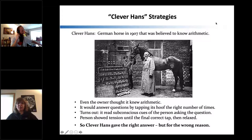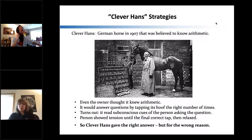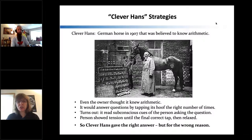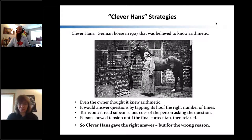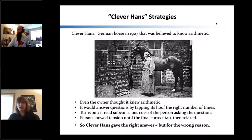Here's the classic story of Clever Hans. Clever Hans was a German horse in 1907 that was believed to know arithmetic. This was shortly after Darwin published his work, and people were excited about animal intelligence. Here was a horse that could do arithmetic — even the owner genuinely believed it. It would answer questions by tapping its hoof the correct number of times for addition, subtraction, division, and multiplication — and it got it mostly right.